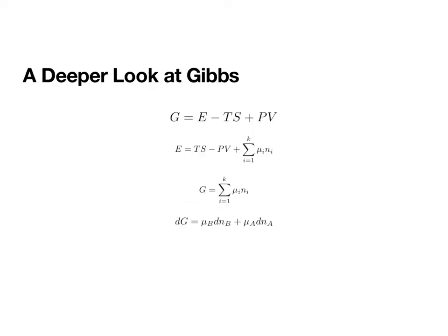So now, if we take a deeper look at Gibbs, Gibbs energy is given as the energy, the internal energy, minus TS plus PV. And the internal energy is TS minus PV. So if we plug this in, we get G is equal to TS minus PV plus our sum of μN minus TS plus PV. And so the TS's and the PV's cancel out. And this gives us that Gibbs is really just equal to the sum over the chemical potentials.